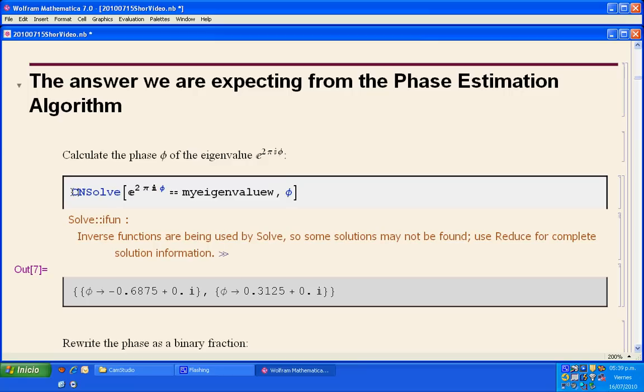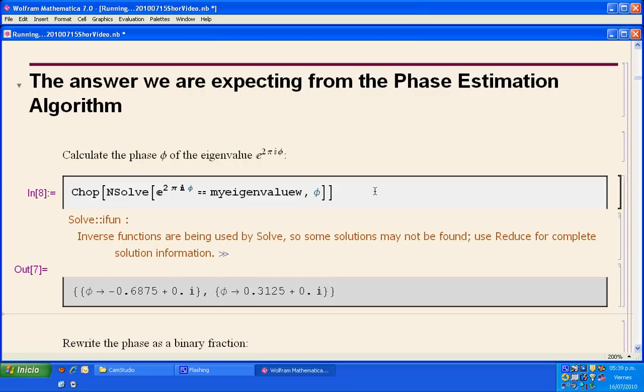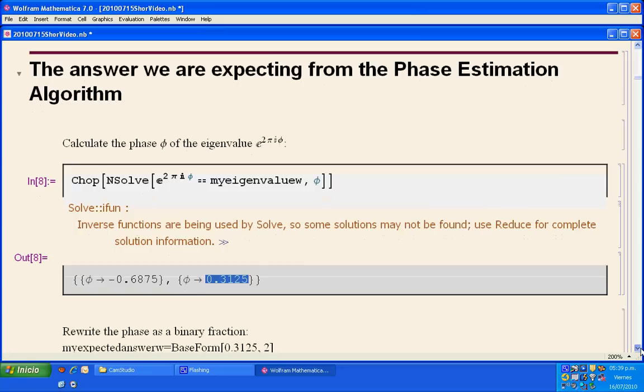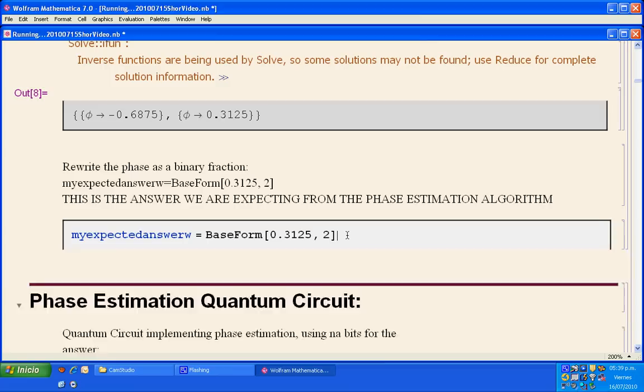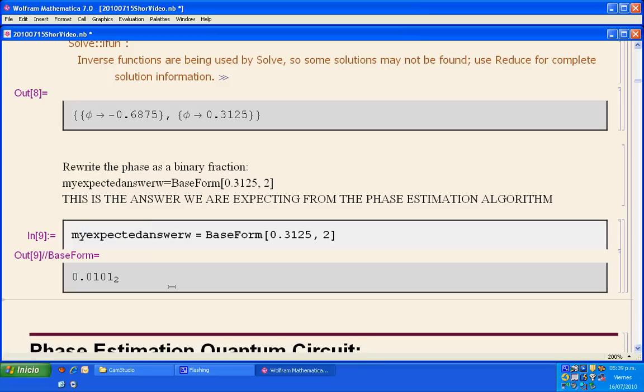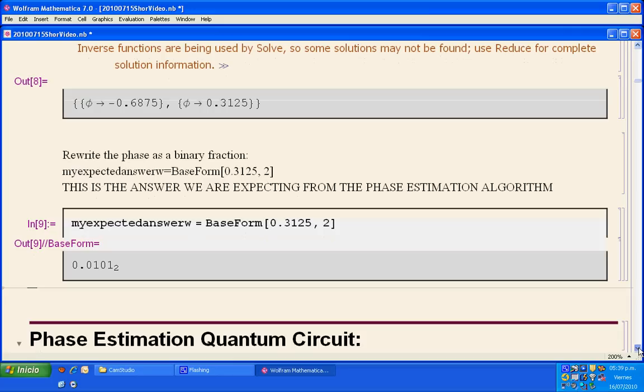To get rid of that zero times i, I can write chop, which is a standard Mathematica command. And then we only have 0.3125. We transform that 0.3125 to a binary fraction using the command BaseForm, and we have 0.0101. That is the answer that we're expecting from the phase estimation circuit: 0101, which is the binary representation of the phase of this particular eigenvalue.